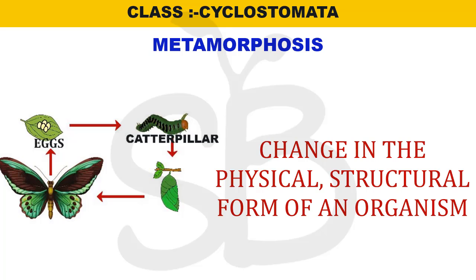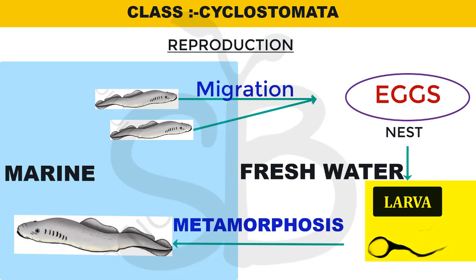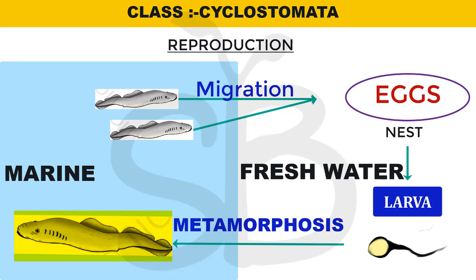The larvae have blind eyes and teeth at the larval stage, and these develop into adult form through metamorphosis — this is one of the changes. The teeth and eyes develop. The larvae live in freshwater, and after metamorphosis they migrate to saline conditions — the marine environment — where they adapt to the saline condition.